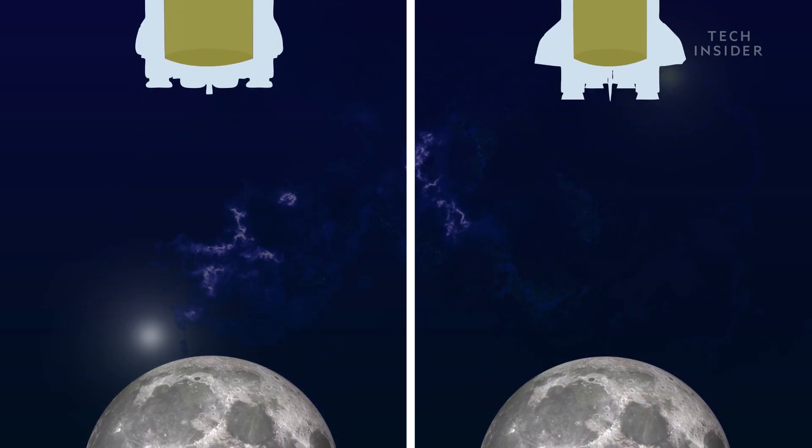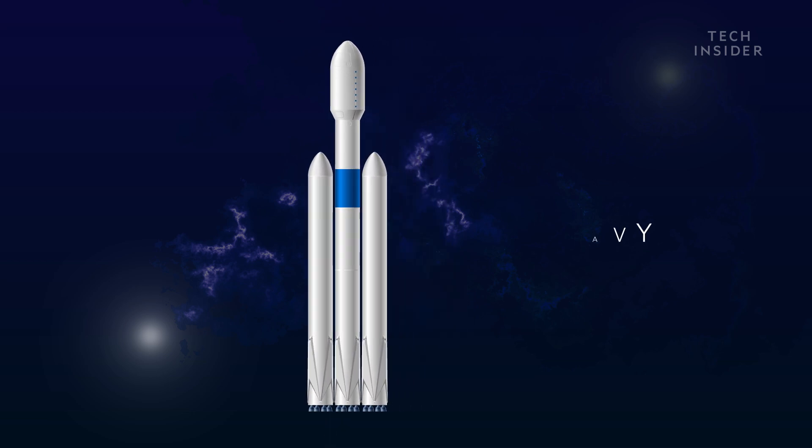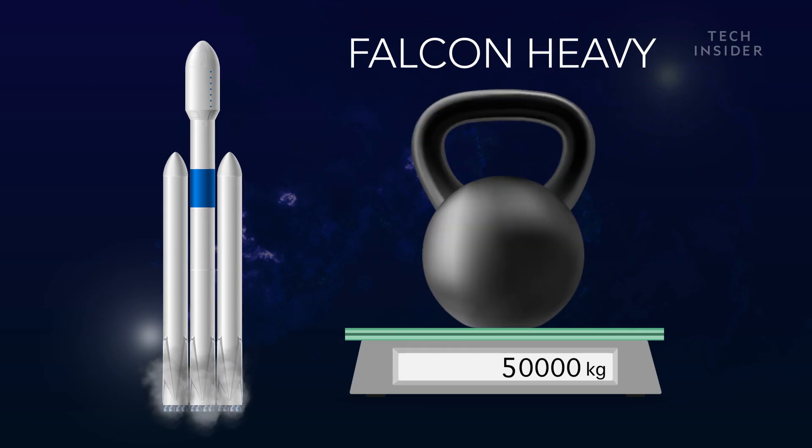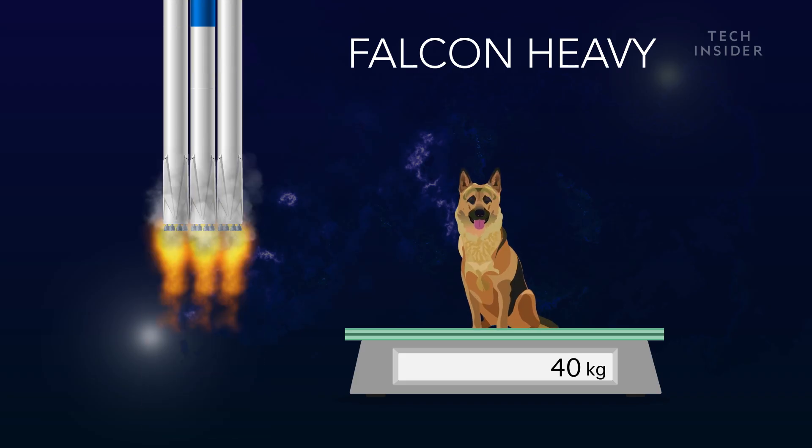Or rockets would have to carry only a fraction of the payload. For instance, SpaceX's Falcon Heavy can launch 50,000 kilograms of payload into Earth's orbit, whereas it could only launch 40 kilograms into orbit around a super-Earth like Kepler-20b. That's about the weight of a German Shepherd.